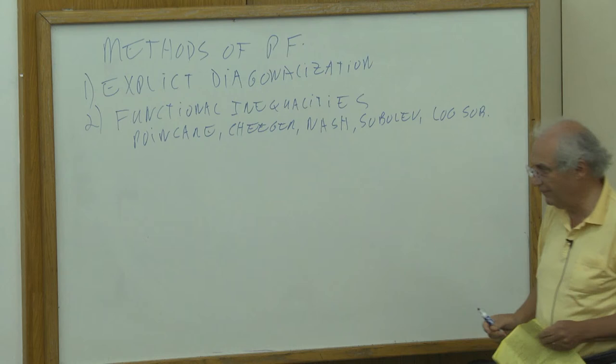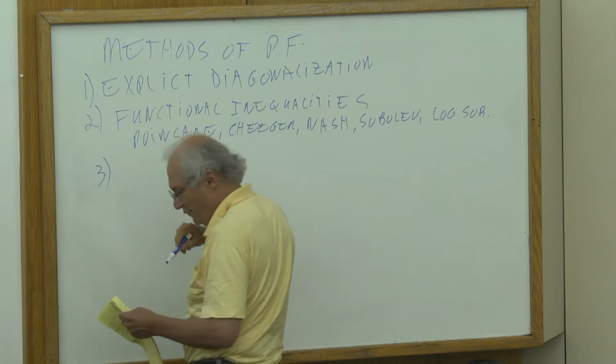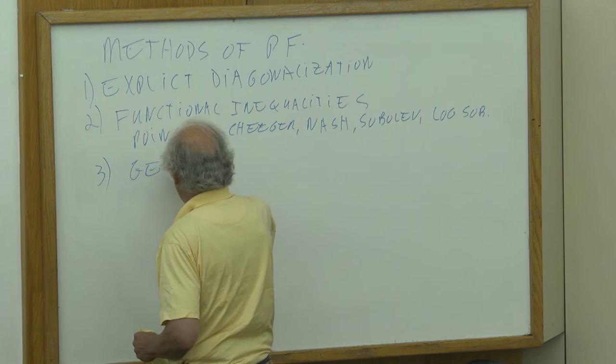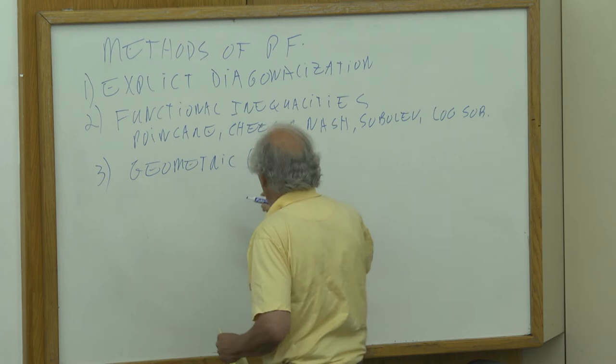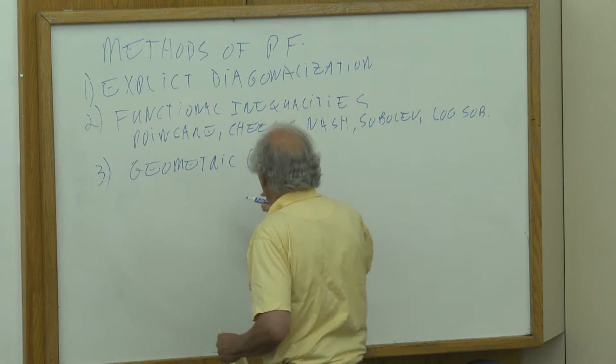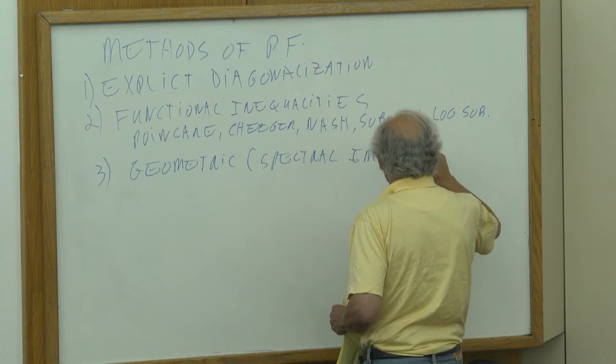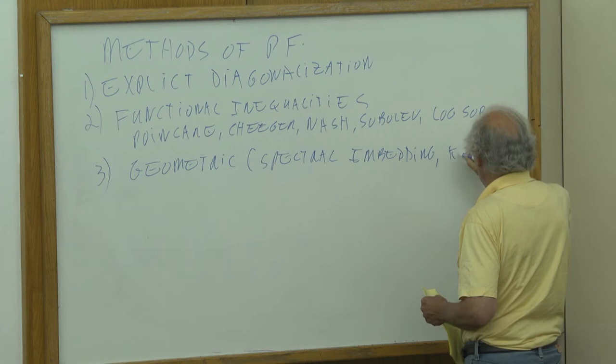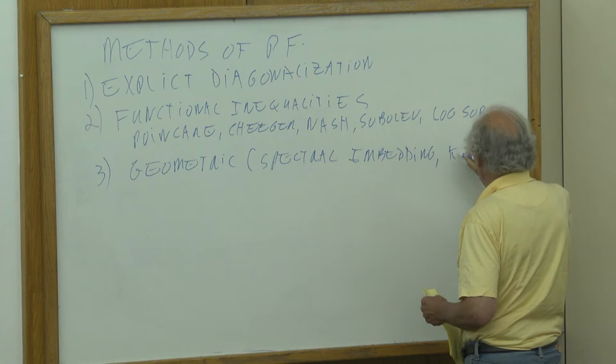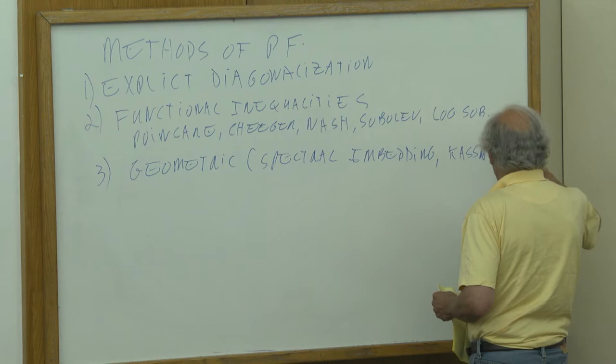Functional inequalities include things like Poincaré, Cheeger, Nash, Sobolev, Log Sobolev, and there are some others. That's a world with many, many things to say, and certainly a lot of progress has been made using those ideas. A third set of techniques I call geometric — the kind of thing that Yuval was talking about: spectral embedding. And there's a technique due to Martin Kasabov that somehow uses the geometry of the problem.